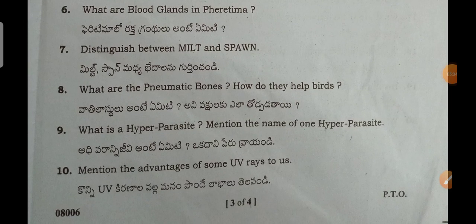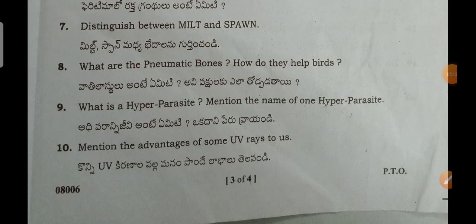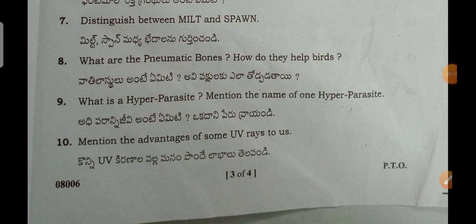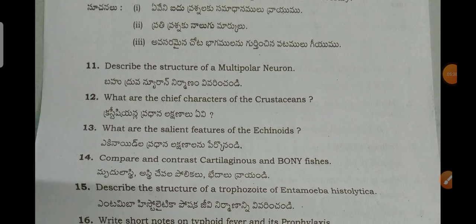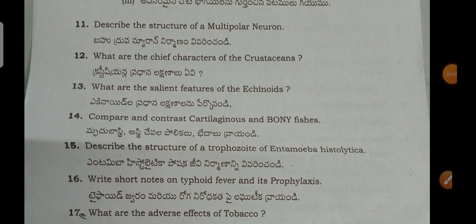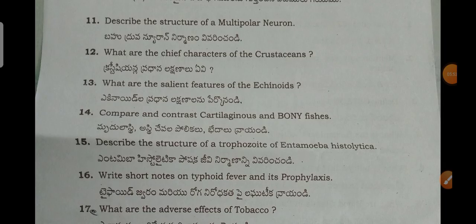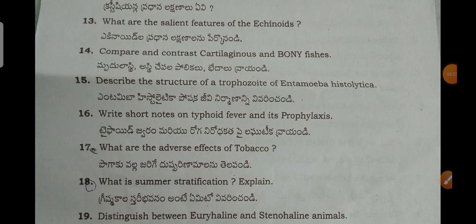Section A zoology questions: What does ICJ stand for? What are the pneumatic bones and how do they help birds? What is a hyperparasite? What are the salient features of Echinoids? Compare and contrast cartilaginous and bony fishes.